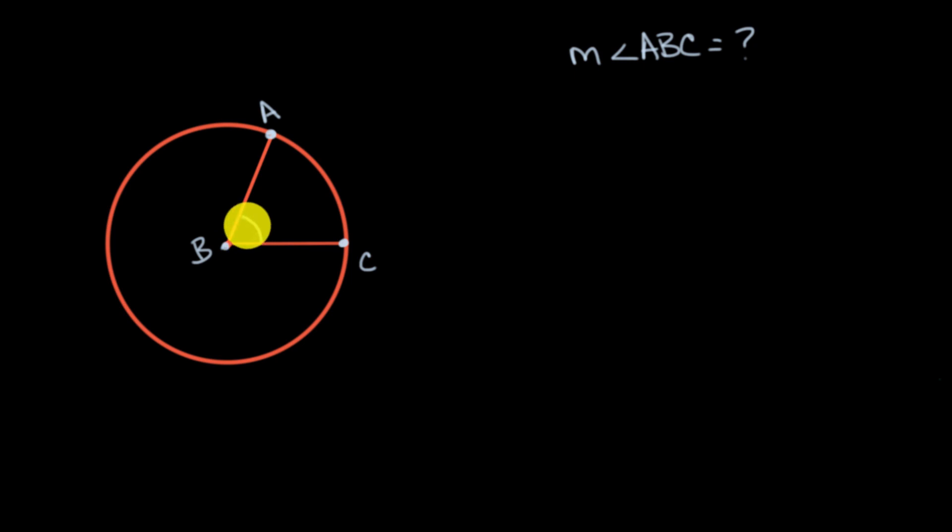Now, one way to think about it would be, well, this angle subtends some arc. In this case, it subtends arc AC. And we could see if this angle were smaller, if its measure were smaller, it would subtend a smaller arc. The length of that arc would be smaller. And if the angle were wider or had a larger measure, if it looks something like that, then the arc length would be larger.